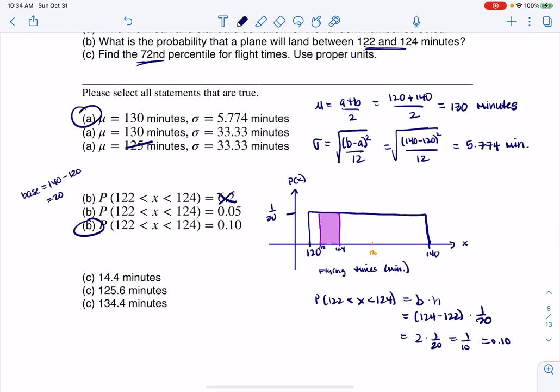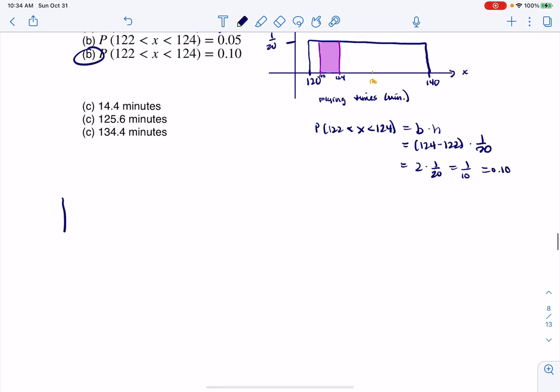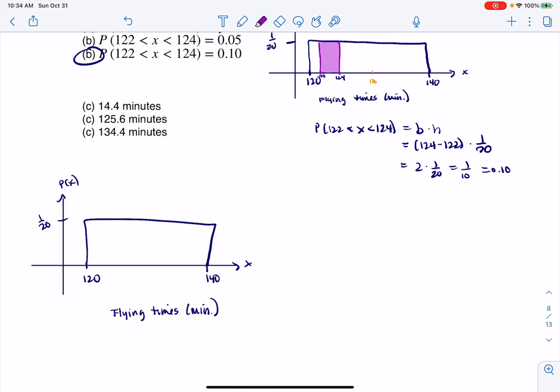And the next thing it wants is the 72nd percentile. So let me go ahead, I'm going to draw another graph. And let's see if we can get the 72nd percentile here. So same graph, basically. But I want the 72nd percentile. So we'll go 120 to 140. And we said this was 1 over 20. And this was flying times. And the units were minutes. So I want the 72nd percentile. So there's some number here. And I don't know what it is. Where this area from here on down is 72% of the area of my curve, or the area under my PDF, same way of saying it.